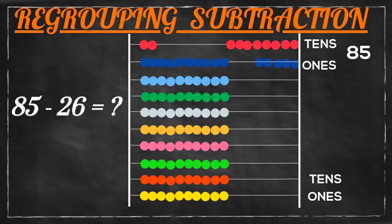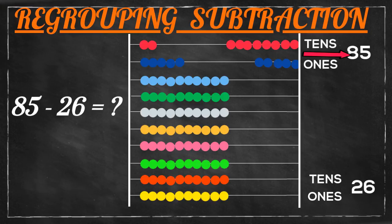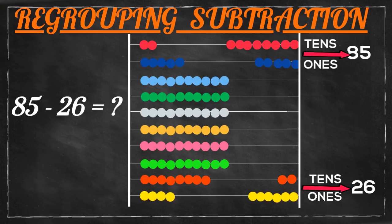Five goes in the ones place. In the bottom portion we should project the smaller number, 26 — two goes in the tens place and six in the ones place.